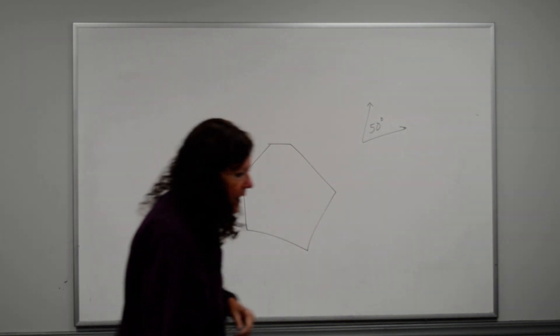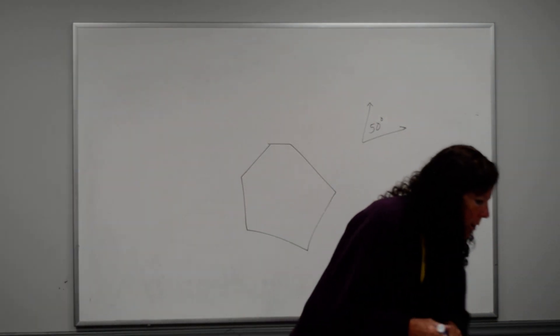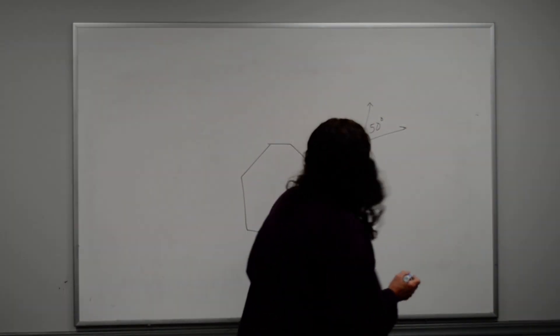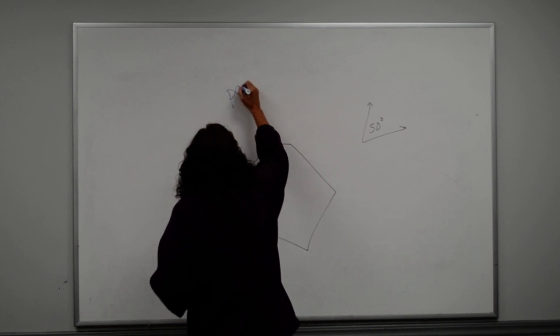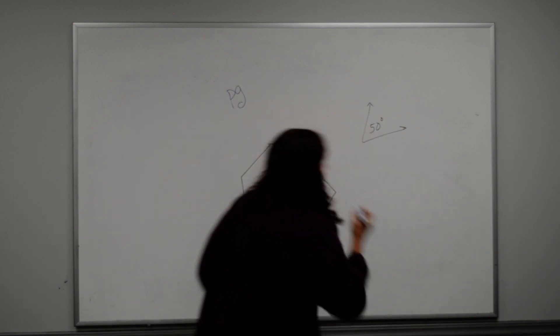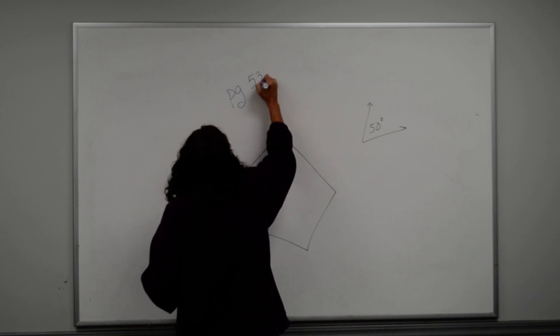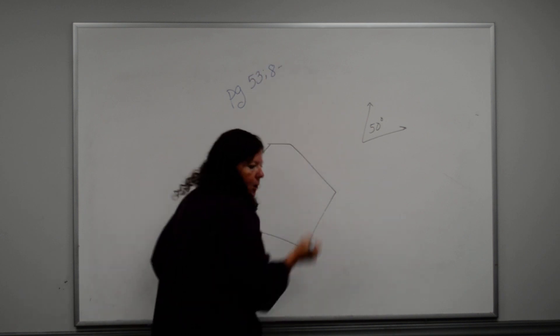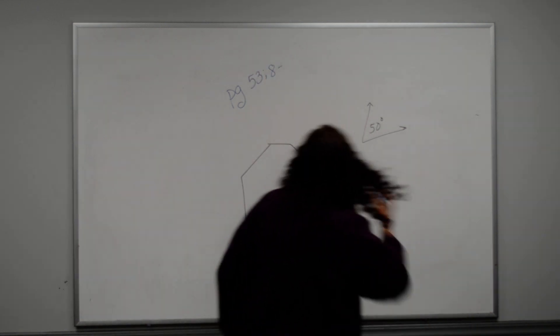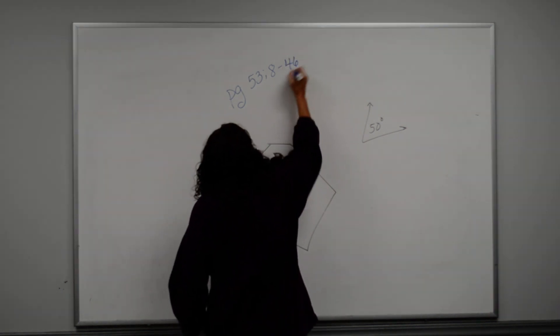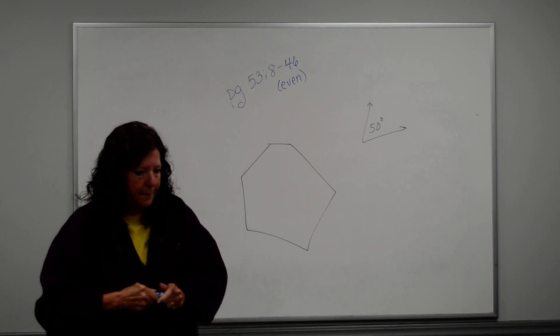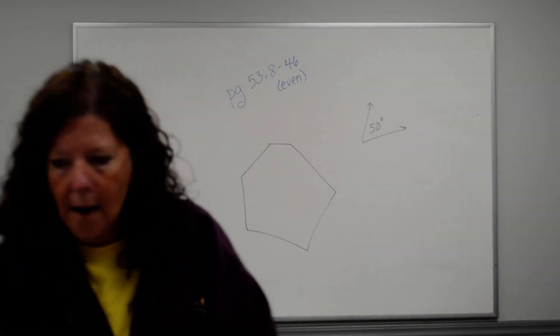Well, actually, I'm going to put this up here now so that it's caught on film for Michelle. But go ahead and write this down. This will be your homework assignment, and then we're going to go back, and we're going to do some problems before you do your homework assignment. So 8 through 46, even. Okay? So go ahead and get that written down. Okay?